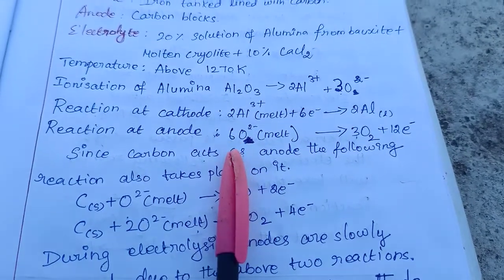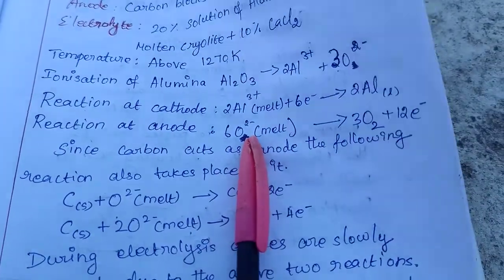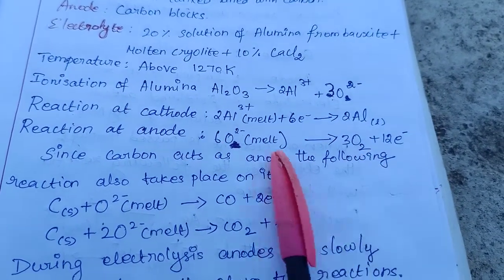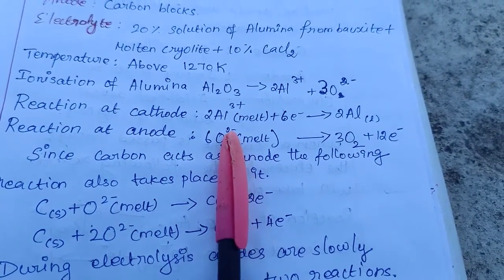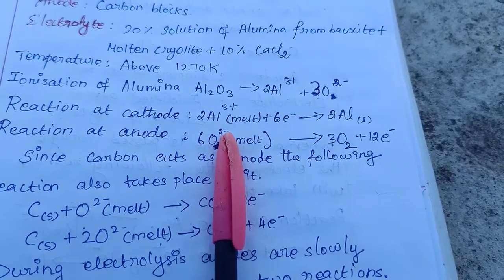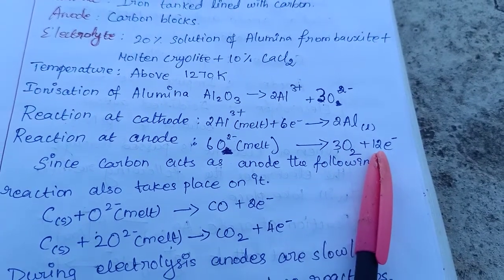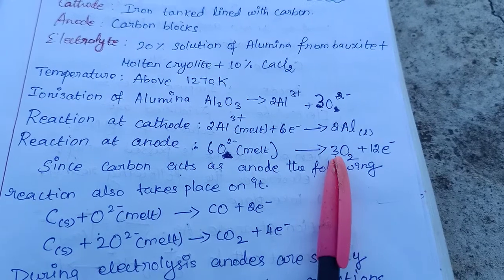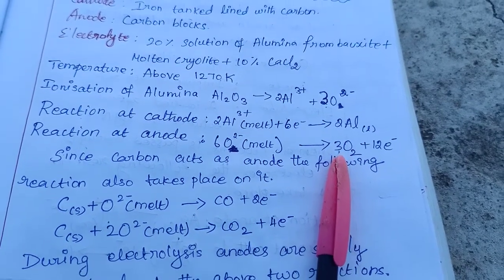At the anode, 6 oxygen ions O²⁻ form 3O₂. Each O²⁻ releases 2 electrons, so 6×2 = 12 electrons are released, producing 3O₂ gas.